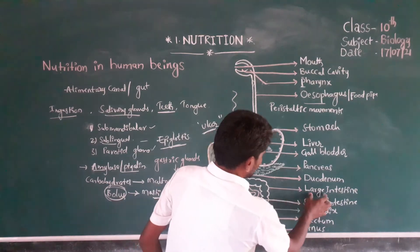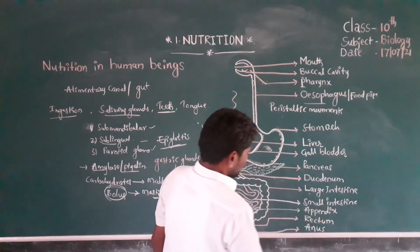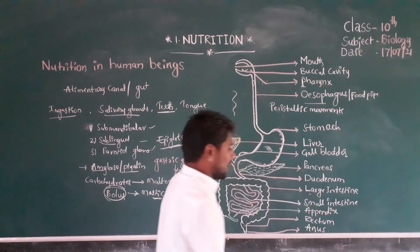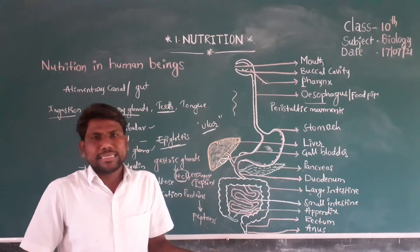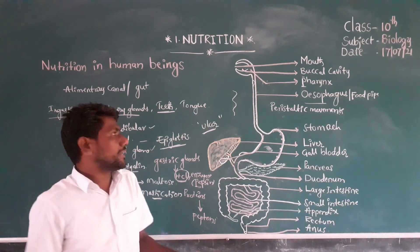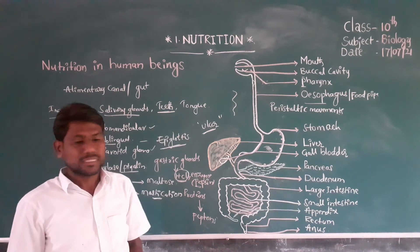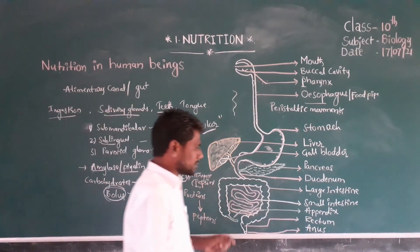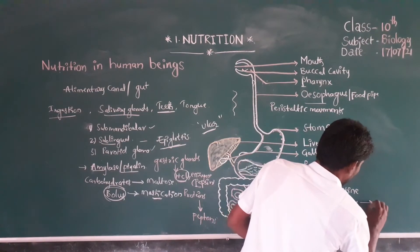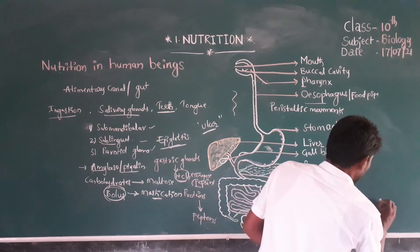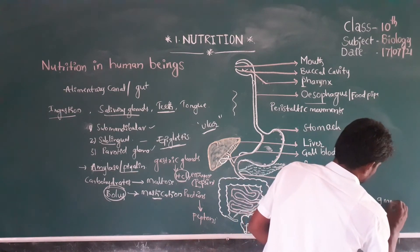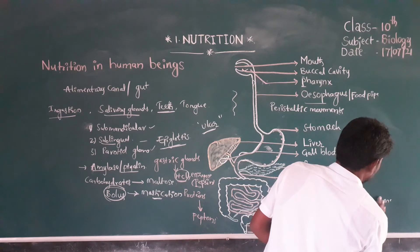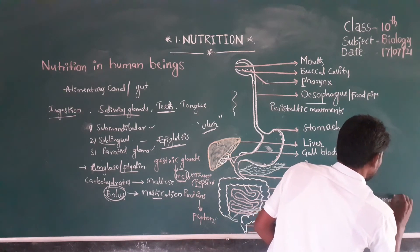Next, the small intestine. The small intestine is the largest part in the human body. Its length is seven meters and width is about three centimeters.